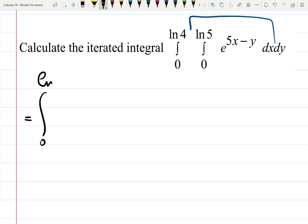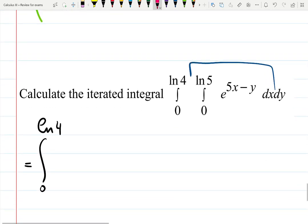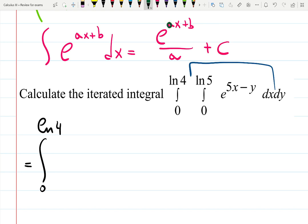Integral from zero to ln 4. Now hopefully you remember the shortcut I explained in my other video or maybe just know it from another class, but integral of e raised to the ax plus b dx is copy your exponential function and then divide by the leading coefficient plus C.